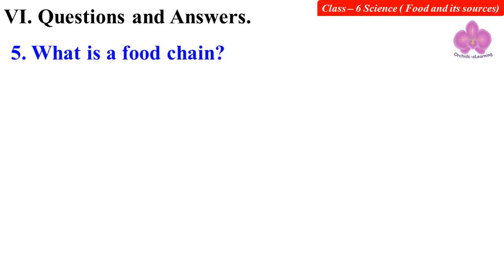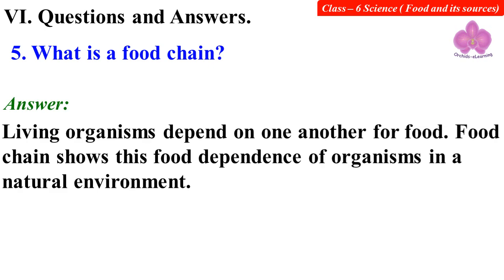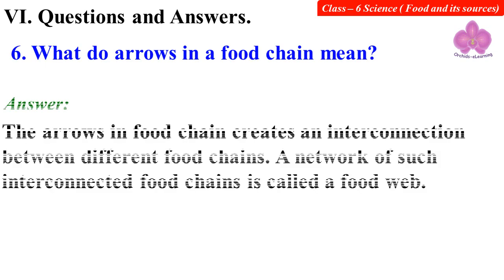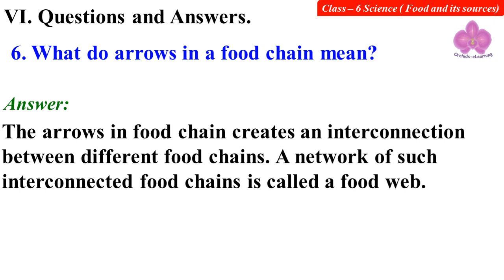What is a food chain? Living organisms depend on one another for food. A food chain shows this food dependence of organisms in a natural environment. What do arrows in a food chain mean? The arrows in a food chain create an interconnection between different food chains. A network of such interconnected food chains is called a food web.